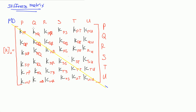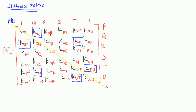Notice that this matrix is completely symmetrical along the main diagonal. For example, here you have PQ and there you have QP; here you have QT and there you have TQ; here you have UT and there you have TU. So the matrix is perfectly symmetrical about the main diagonal. Each of these 36 K values represents a stiffness value.